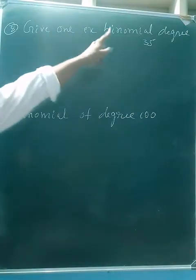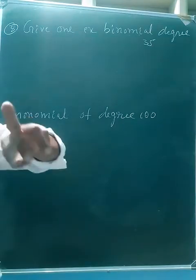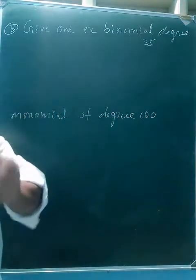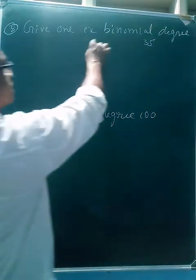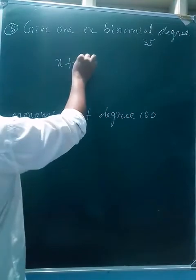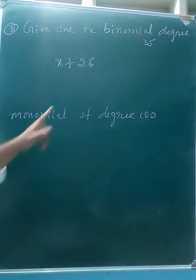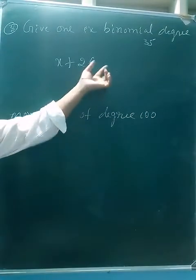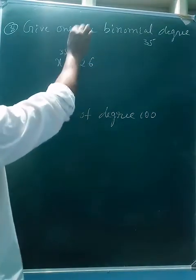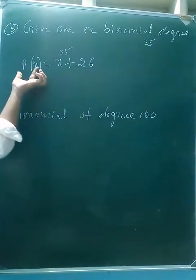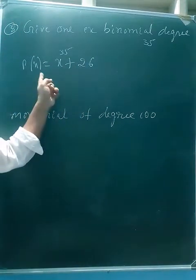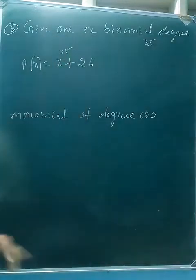Third question: give an example for a binomial. A binomial has two terms. A monomial has one term — that is a number or variable. Example of a binomial: x + 26. It is a binomial with two terms. The power of the variable is 35. p(x) equals a polynomial of x set equal to zero.